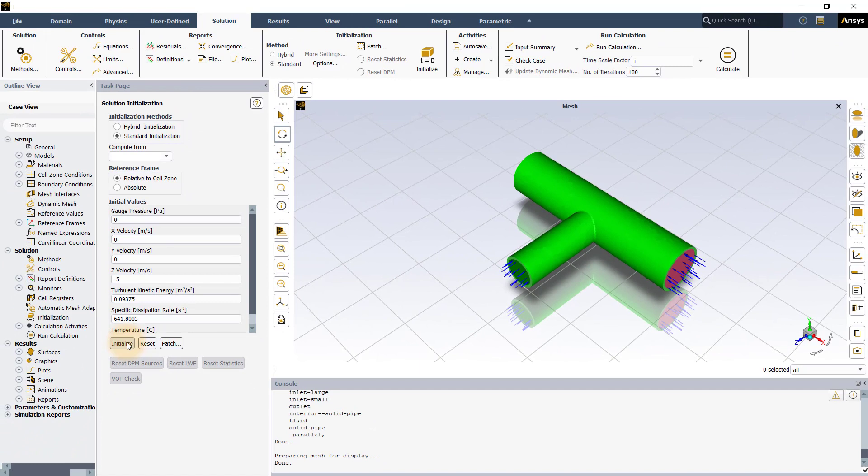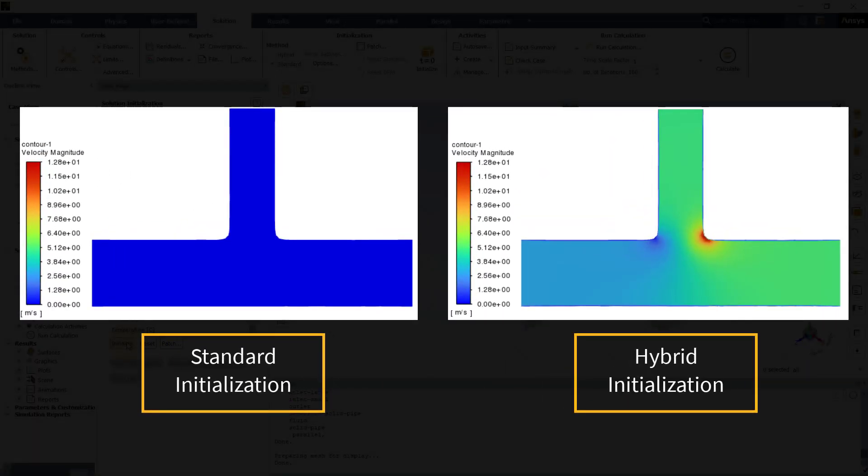To compare both hybrid and standard initialization methods visually, let us look at the velocity contours for both. As seen from the image on the left, the standard initialization will initialize the entire flow field with a single value, whereas the hybrid initialization, on the other hand, initializes the flow field with spatially varying values making it more realistic to the actual solution.